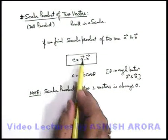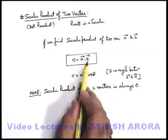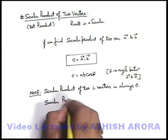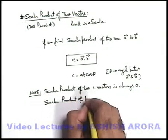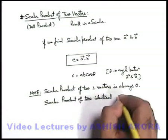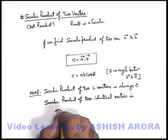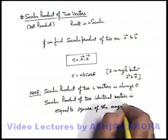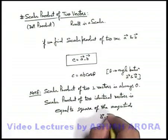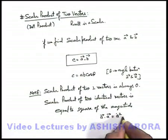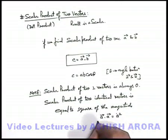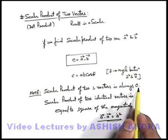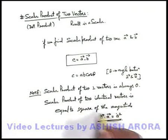If there are two identical vectors, say A and A, and we take the dot product, it will be A × A × cos0° which becomes A². So the scalar product of two identical vectors is equal to the square of the magnitude. Like A·A = A² × cos0° = A².